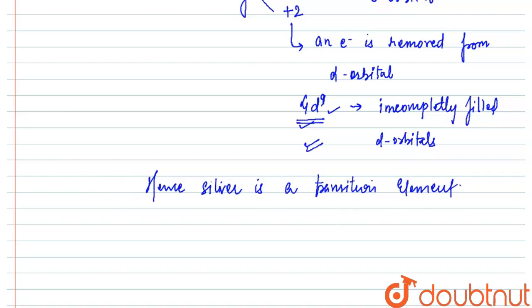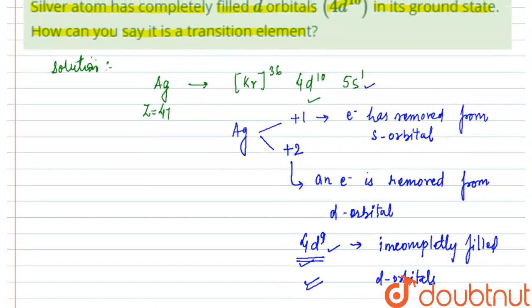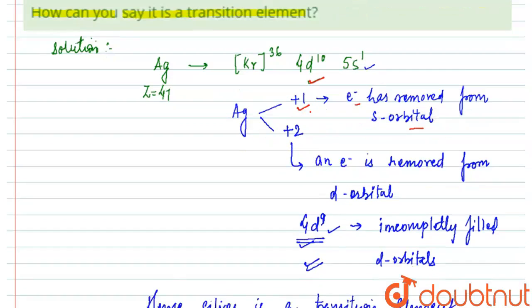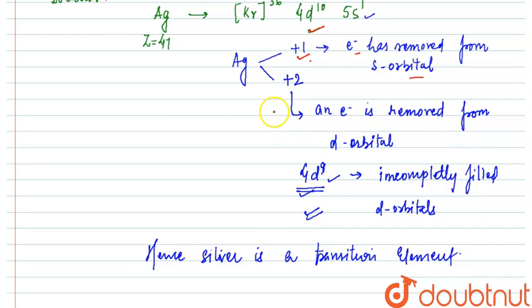So the summary is that in ground state, if you have to observe it, or in +1 oxidation state, then it still has completely filled d orbital, because in +1 oxidation state, the electron will be removed from s orbital.